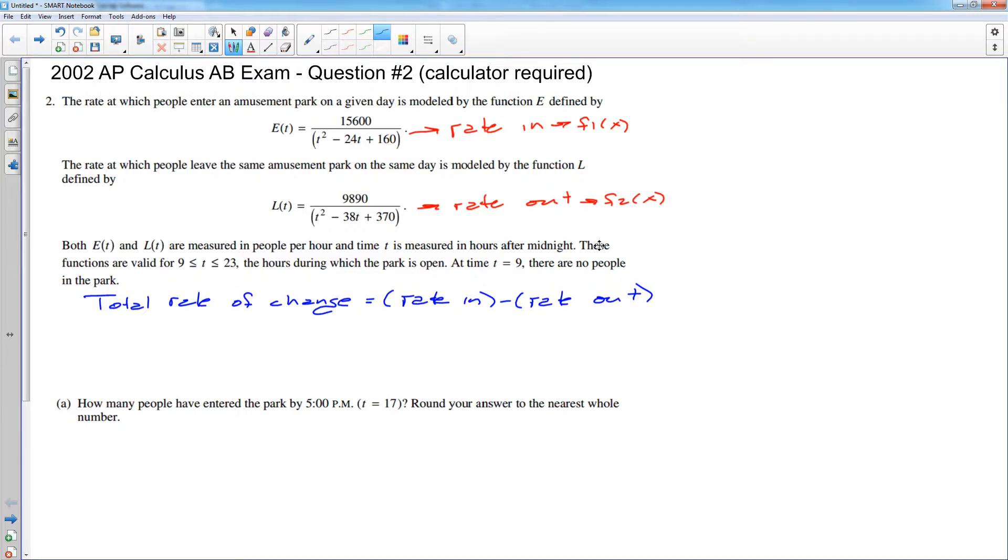I don't have a function for the total number of people in the park, so for now I'm just going to say A of T is the number of people in the park. And if I define the number of people in the park to be A of T, then my total rate of change is going to be A prime of T, which is the rate that people are going in, which is E of T, minus the rate that people are going out, which would be L of T.